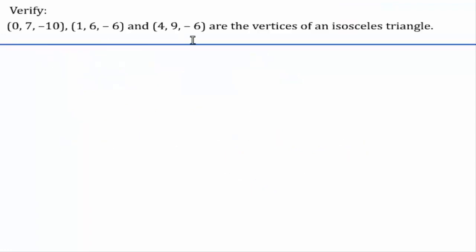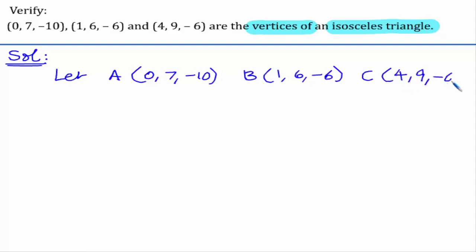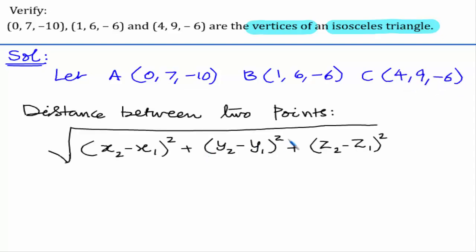In this problem, we have to verify that the given 3 points are the vertices of an isosceles triangle. We know that an isosceles triangle has 2 sides equal in length. Let us assume A as (0, 7, -10), B as (1, 6, -6), and C as (4, 9, -6). The distance formula is the square root of (x2 minus x1) whole square plus (y2 minus y1) whole square plus (z2 minus z1) whole square.